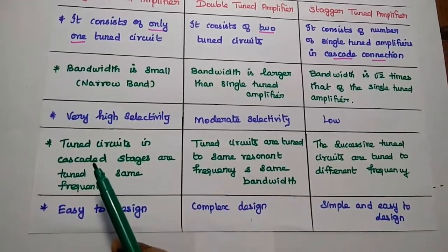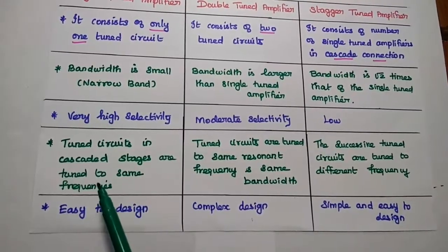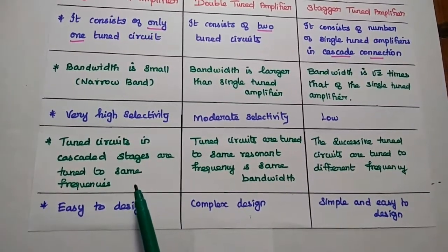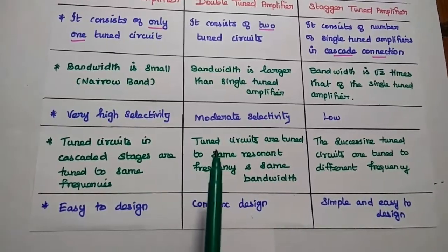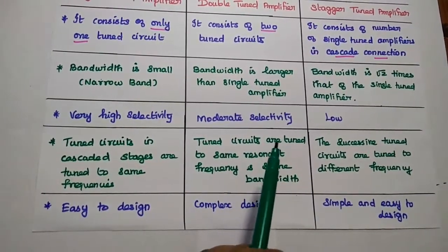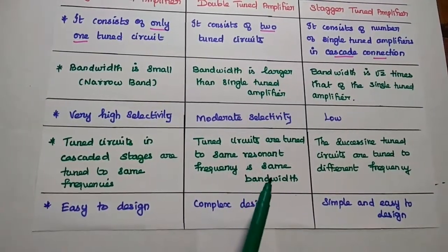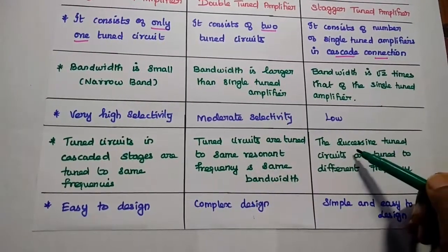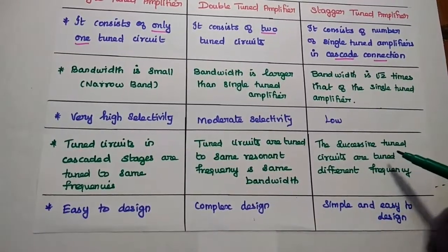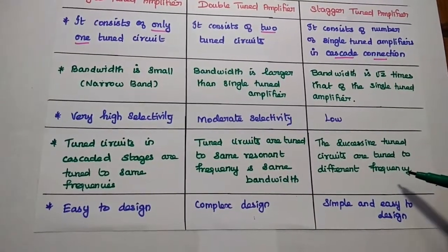The tuned circuits in cascaded stages of the single tuned amplifier are tuned to the same frequency — that is the resonant frequency. In the double tuned amplifier, the tuned circuits are also tuned to the same resonant frequency and same bandwidth. For the stagger tuned amplifier, the successive tuned circuits are tuned to different resonant frequencies.